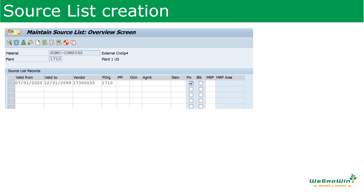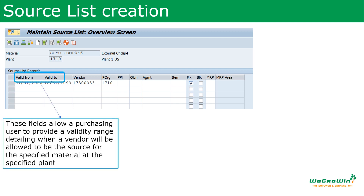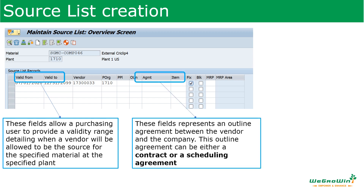After entering the material number and plant, the system brings you to the transaction screen. Here we see the validity date for this material and plant. The agreement column is the outline agreement or a contract between the vendor and the company — a scheduling agreement can also be entered in this column. The item field is the item number of the material in the outline agreement or contract. These fields will be required if there is an agreement.